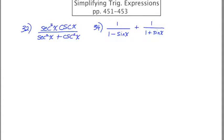In number 32, I think my strategy is going to be to change everything to sines and cosines. So what I'm going to have here is 1 over cosine squared x times 1 over sine x all over 1 over cosine squared x.